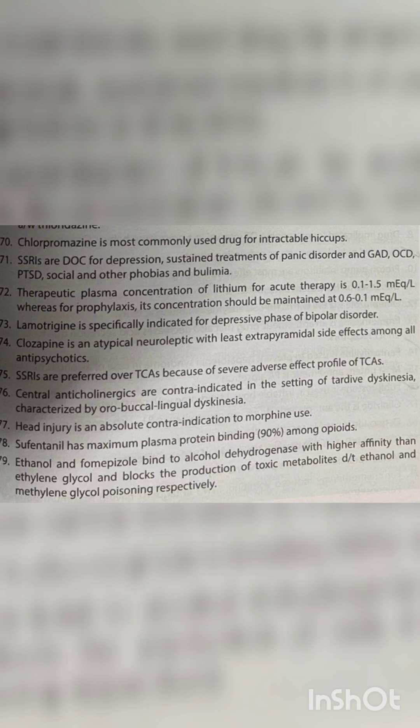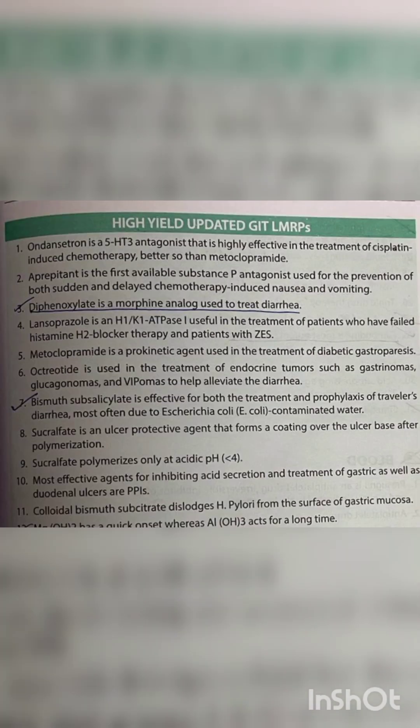Ethanol and fomepizole bind to alcohol dehydrogenase with higher affinity than ethylene glycol and block the production of toxic metabolites due to ethanol and methanol/ethylene glycol poisoning respectively. Ondansetron is a 5-HT3 antagonist that is highly effective in the treatment of cisplatin-induced chemotherapy nausea, better so than metoclopramide. Aprepitant is the first available substance P antagonist used for the prevention of both sudden and delayed chemotherapy-induced nausea and vomiting.